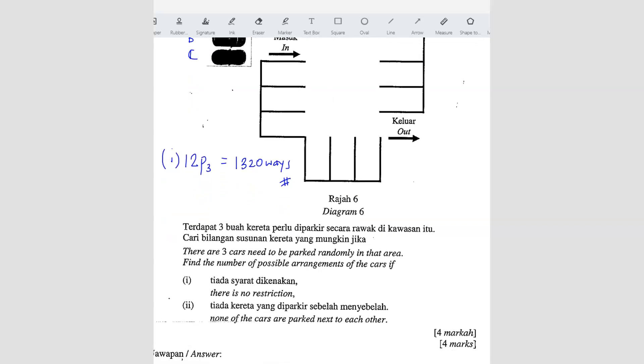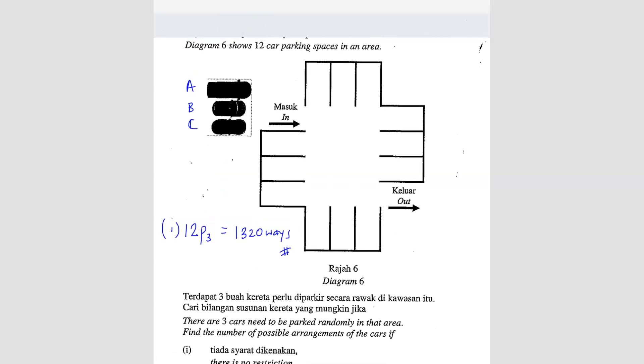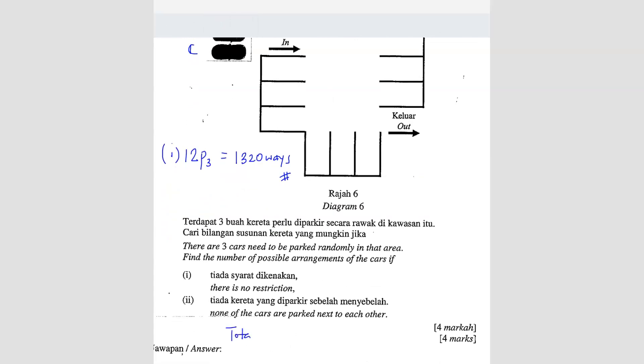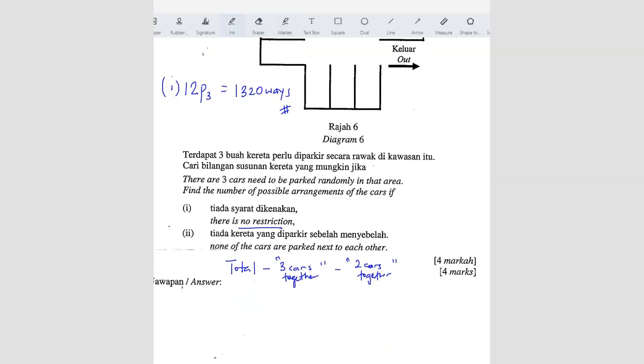None of the cars are parked next to each other. So what we can do is, we can find the same as the previous question. We find the total. Total means no restriction. So we can use back this answer. The total minus, so they say none of the car parked together. So we can minus 3 cars parked together. And then we can minus 2 cars together.